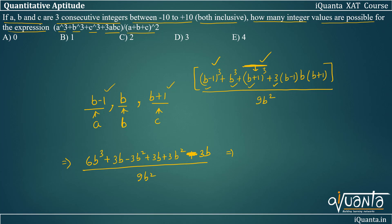So +3B and -3B will cancel, -3B² and +3B² will cancel. We'll be left with 6B³ + 3B upon 9B².